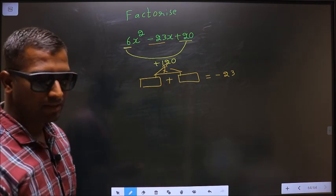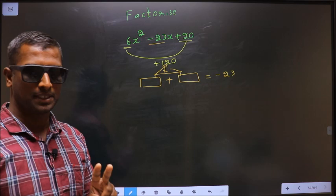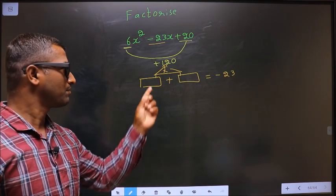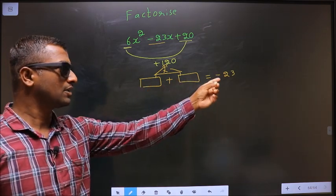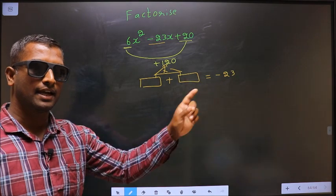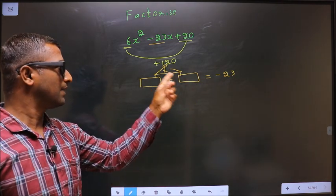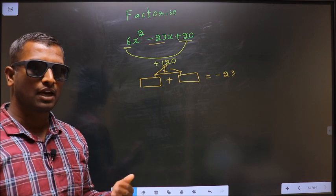I repeat, look out for two numbers such that when you add, you should get minus 23. And also, when you multiply, you should get plus 120.